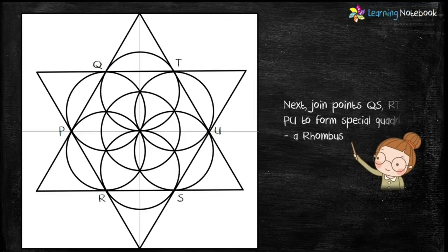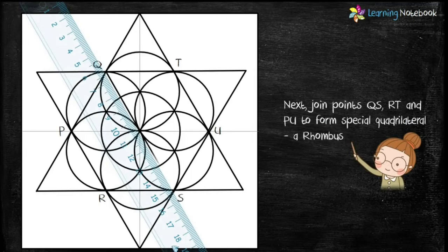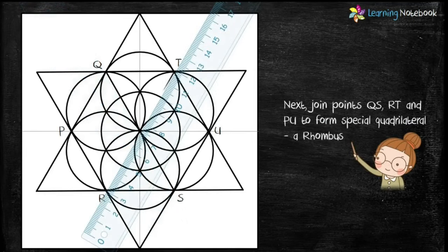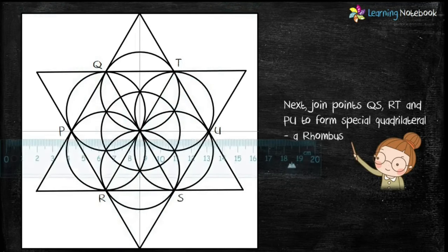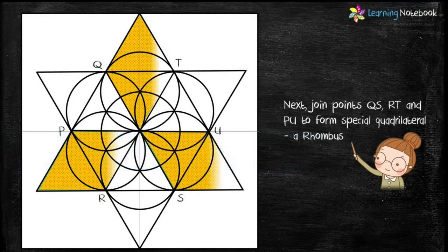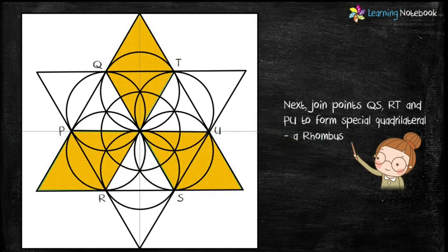In the same way join points Q, T, P, R, S and U, S to form another triangle. In the next step let's join points Q, S, R, T, P, U to form a special quadrilateral, rhombus.